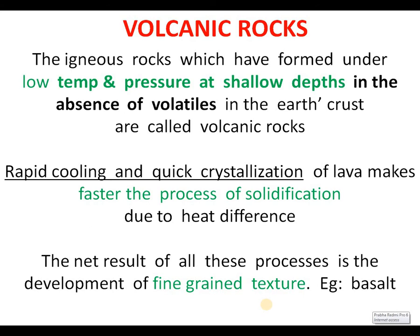Volcanic rocks: igneous rocks which have formed under low temperature and pressure at shallow depths, in the absence of volatiles in the earth's crust, are called volcanic rocks. Due to rapid cooling and quick crystallization of lava, solidification is faster, and the net result is the development of fine-grained texture. Basalt and rhyolite are best examples for volcanic igneous rocks.